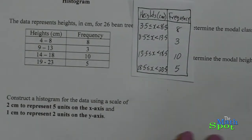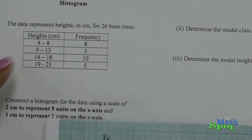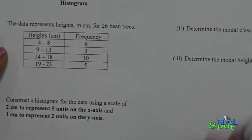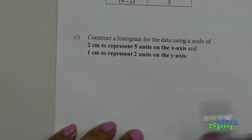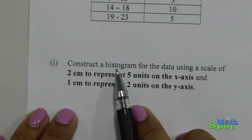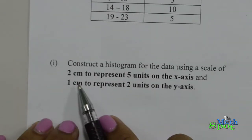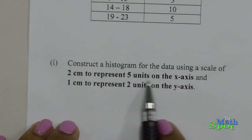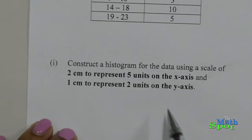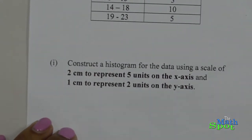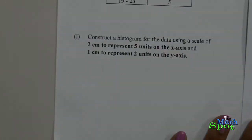Now we're going to go to our graph. Let's check the scale. We have a defined scale: construct a histogram using a scale of 2 centimeters to represent 5 units on the x-axis and 1 centimeter to represent 2 units on the y-axis. Keep that scale in mind as we draw our histogram.